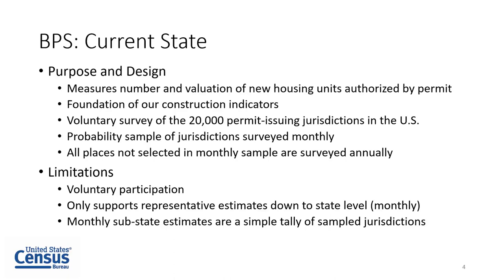The BPS forms the foundation of our construction indicator programs, measuring the first stage of the construction lifecycle: permit authorization. On a monthly basis, we survey a probability sample out of the roughly 20,000 permit-issuing jurisdictions in the United States, and any places not selected for this monthly sample are surveyed annually. Our current approach to the BPS has a few limitations, one of which is that it relies on voluntary participation. On a monthly basis, the current design only supports representative estimates down to the state level, with sub-state estimates only reflecting a simple tally of the jurisdictions selected for that monthly sample.